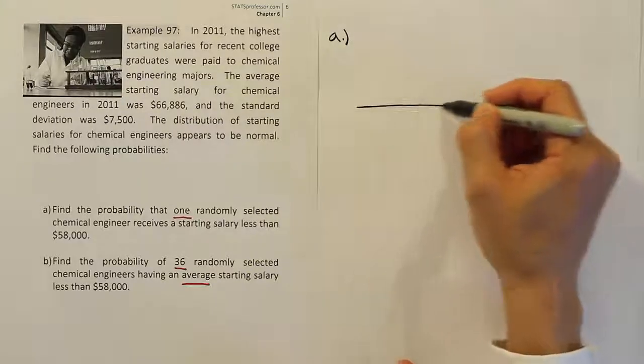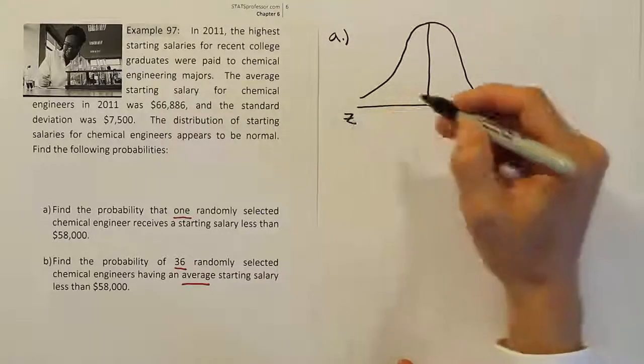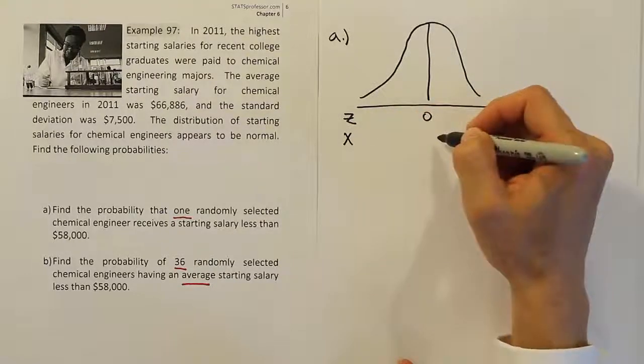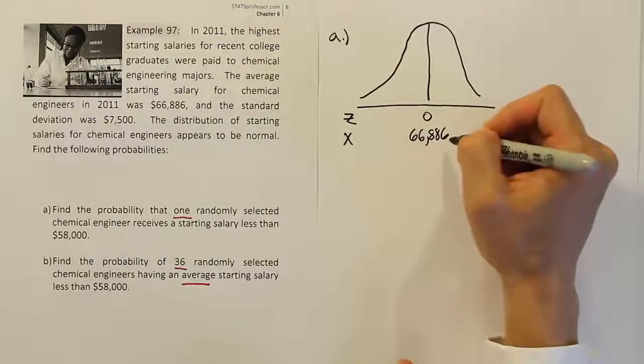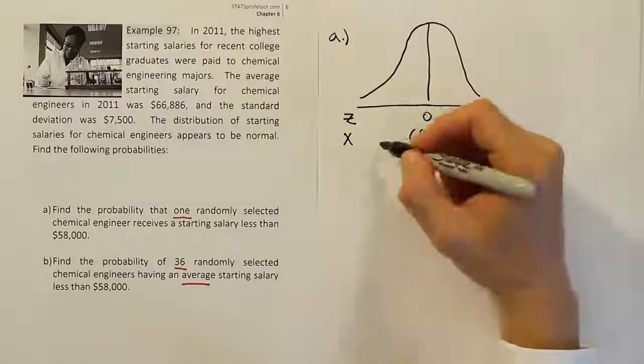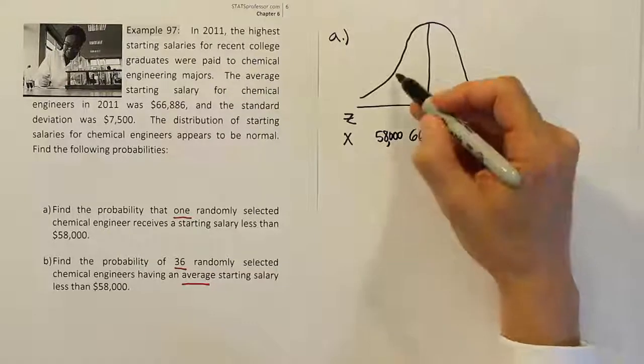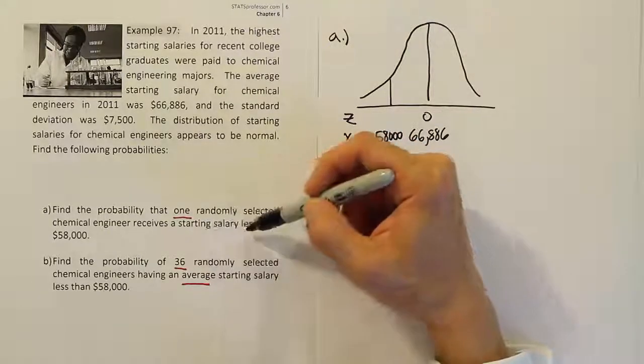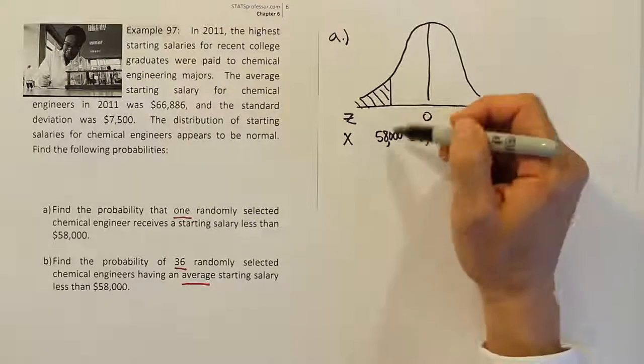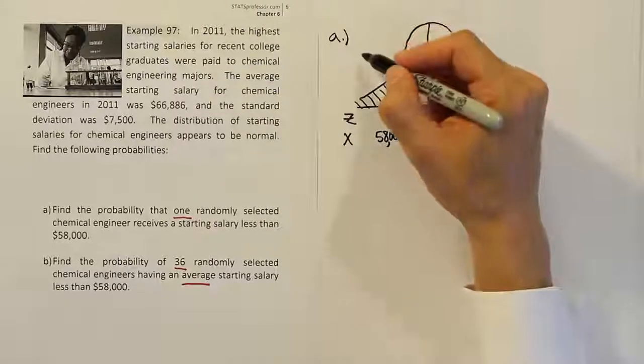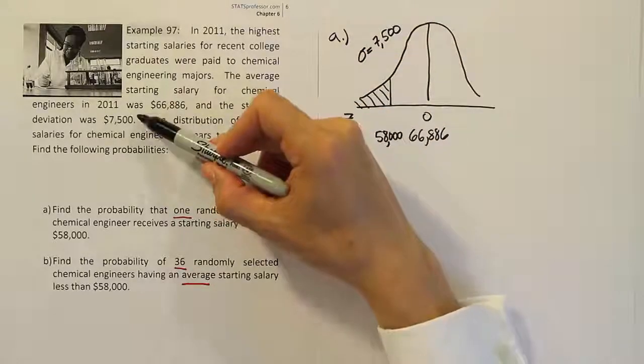We're going to draw a bell curve. We're going to label on the bell curve the mean at the bottom along with a z-axis. This is an x-axis. We're going to put the mean. The mean was 66,886. Then we're going to put the number they're asking about in the problem, which is 58,000. That would be here to the left of 66,000. And the problem says find the probability that he has a starting salary less than that. They tell us that the standard deviation in this case is 7,500.